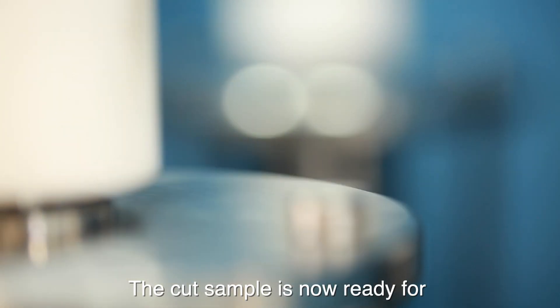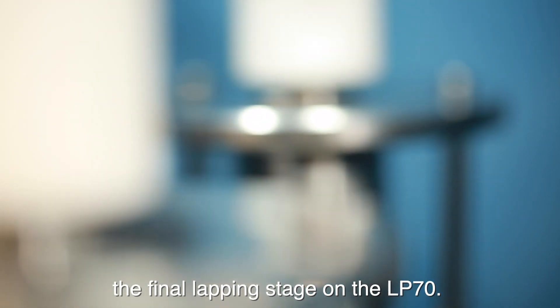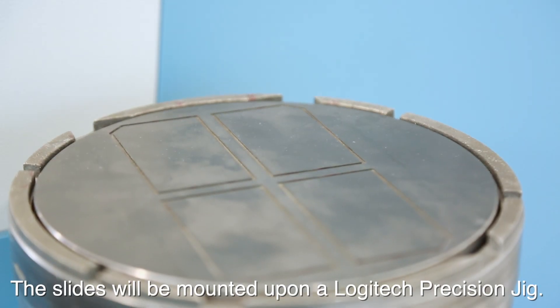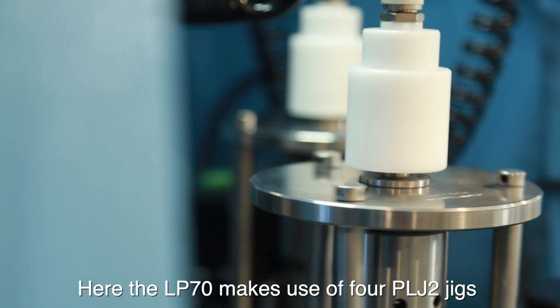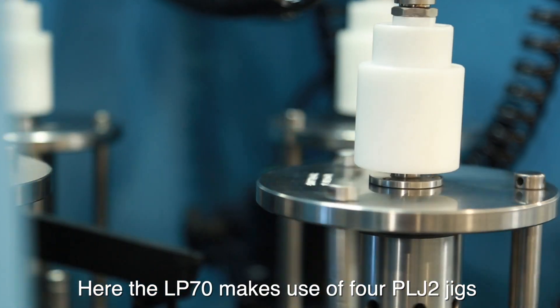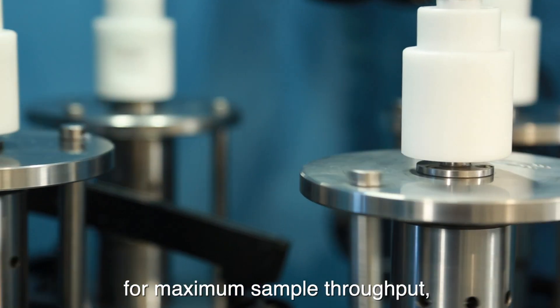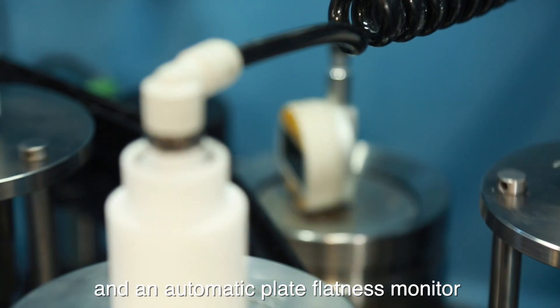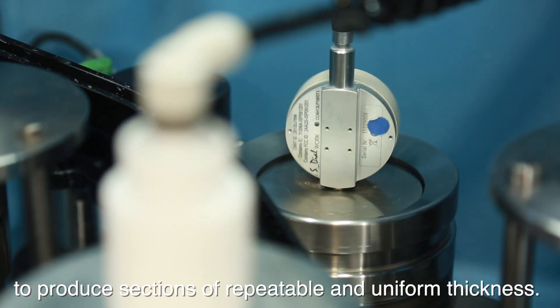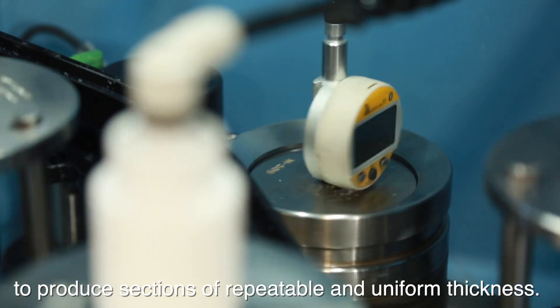The cut sample is now ready for the final lapping stage on the LP-70. The slides will be mounted upon a Logitech precision jig. Here, the LP-70 makes use of four PLJ-2 jigs for maximum sample throughput, or three PLJ-2 jigs and an automatic plate flatness monitor to produce sections of repeatable and uniform thickness.